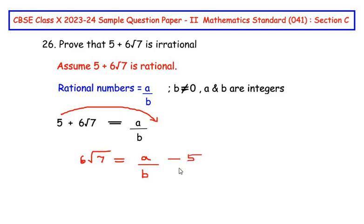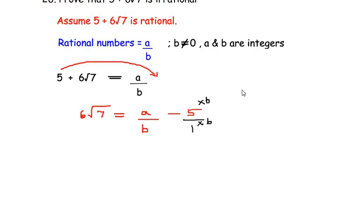Now we are going to take the LCM. This is 5 over 1. So multiplying this by b and this by b we are going to get a common denominator and we will write here: 6 root 7 is equal to a minus 5b over b.